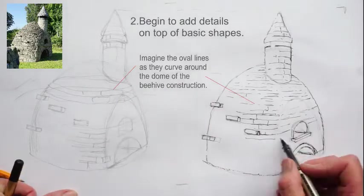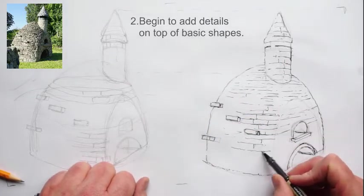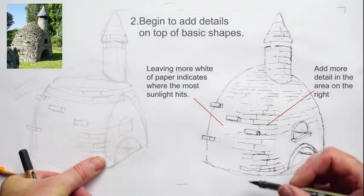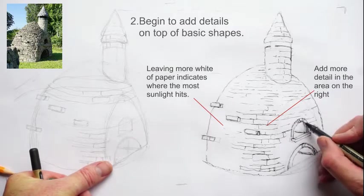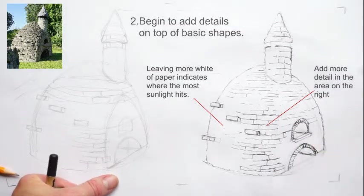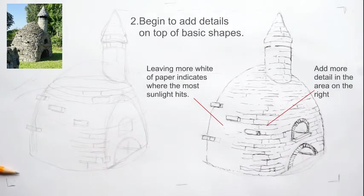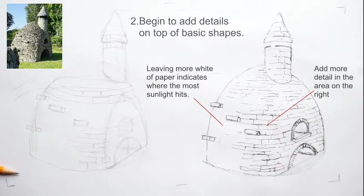The one on the left there. So we tend to leave, you know, where there's most of the light hitting on the left, we leave that kind of blank paper there. And we put most of our detail and lines towards the right hand side. So it's kind of a very quick way to indicate where light is hitting. Yeah, so that's it in essence. That's the basis of drawing from basic shapes to adding detail.